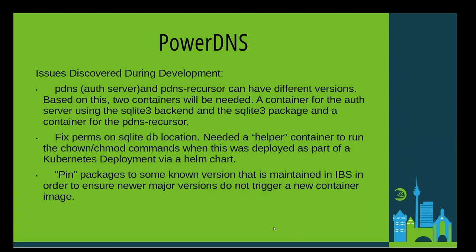A second issue was related to the change in permissions on the SQLite DB location. When the container was deployed using a Kubernetes deployment or Helm chart, there were issues when the permissions of the SQLite DB directory were changed to the pDNS user. This was solved using a helper container that was run at startup as a privileged user and executed the required chown and chmod commands and then exited. The final issue was finding a stable version of PowerDNS in OBS. Initially linking to server:DNS or OpenSUSE Factory resulted in the container being frequently updated. It was discovered that the OpenSUSE Backports SLE 15 SP4 project contained a stable version that did receive CVE patches.